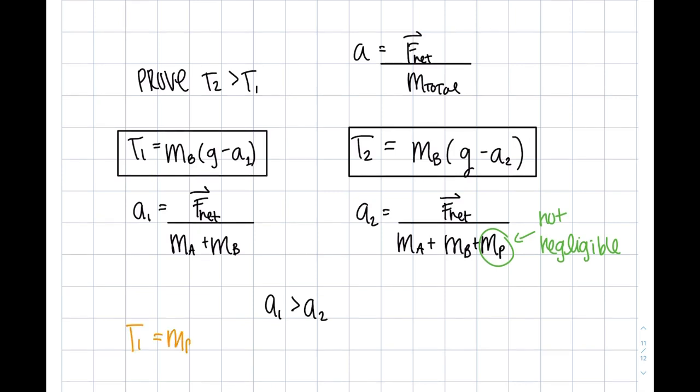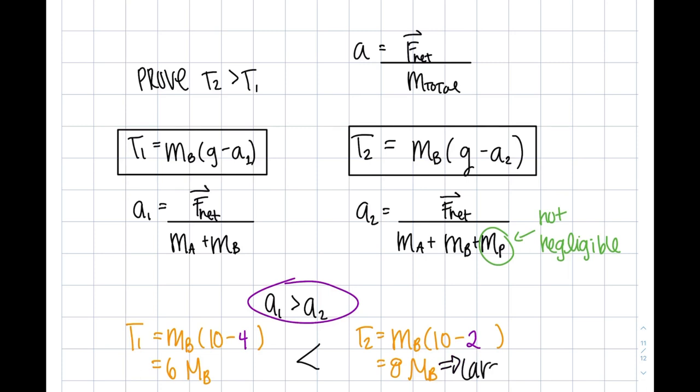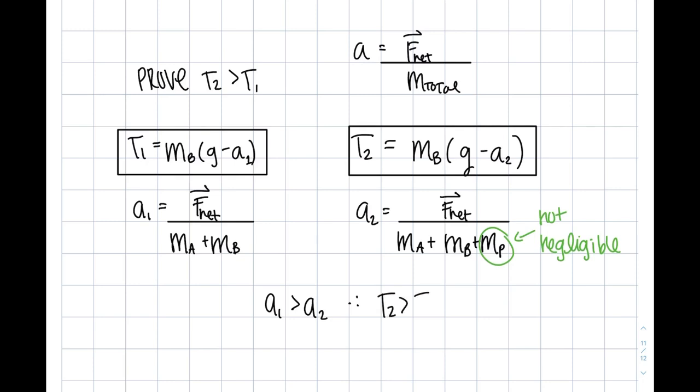So understanding that, we can now plug in this information into our tension equations. I'm going to use the similar idea of using arbitrary numbers to better understand the situation. As we know, g is gravity, which is 9.8 meters per second, but I'm going to round it up to 10. All I need are numbers indicating that A1 is larger than A2. So I'm just choosing 4 and 2. If I try to actually solve this, keeping MB as just MB, we can see that tension 2 turns out to be larger than tension 1. And therefore, we have proven that T2 is greater than T1.